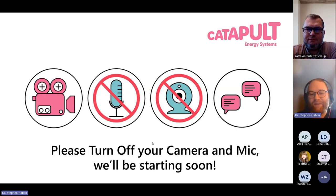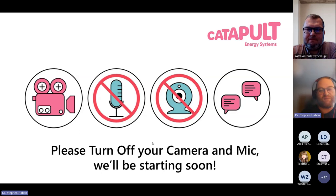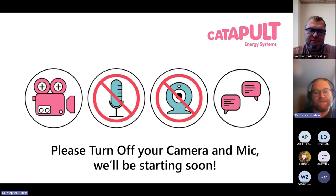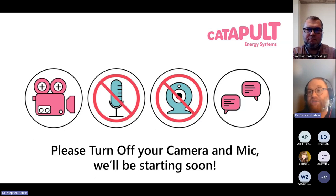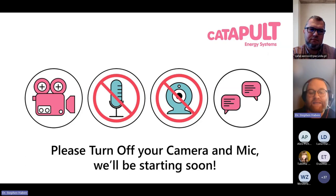Hello everyone. I'm Stephen Haven, a data science consultant here at the Energy Systems Catapult. I'm very happy to introduce you to another Value in Energy Data seminar. I'm very pleased to introduce our speaker, Professor Raphael Varon. He's a professor of management science and head of the Department of Operations Research and Business Intelligence at Wrocław University of Science and Technology. He's one of the world's leading experts on energy forecasting and is periodically engaged as a consultant of financial, energy, and software engineering companies. Today's talk is going to be on recent advances in electricity price forecasting. Please take it away, Rafa.